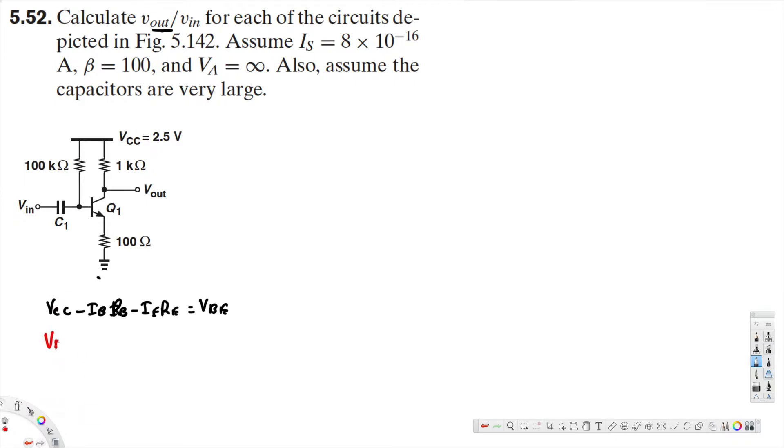Instead of I_B, we can replace it with I_C over beta, because I_B equals I_C over beta. So this is I_C over beta times R_B. Instead of I_E, we can replace it with (1 plus beta) divided by beta times I_C, times R_E. Instead of V_BE, we can replace it with V_T times natural log of I_C over I_S.